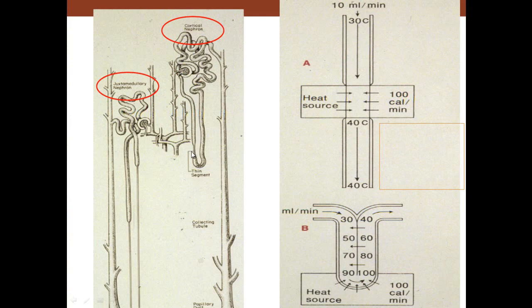There are 180 liters of fluid filtered every day, and you need to return that fluid back to the blood. The corticonephrons serve this purpose — returning fluid quickly. In contrast, we want the urine to be concentrated, so the juxtamedullary nephrons are involved in concentration of the urine. Even though the corticonephrons are largely in the cortex, their collecting duct also goes down through the medulla and benefits from a gradient set up by the long loop of the juxtamedullary nephrons.